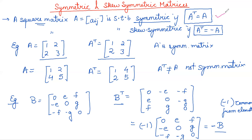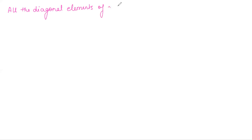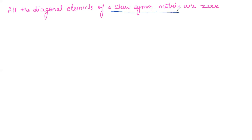Now there is a very important result from here, which can be asked in a two-mark question. The result is: all the diagonal elements of a skew-symmetric matrix are zero. This is a very interesting thing — if you know that a matrix is skew-symmetric, then you know that all its diagonal entries will be zero.